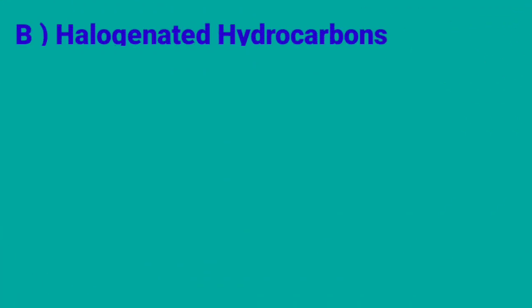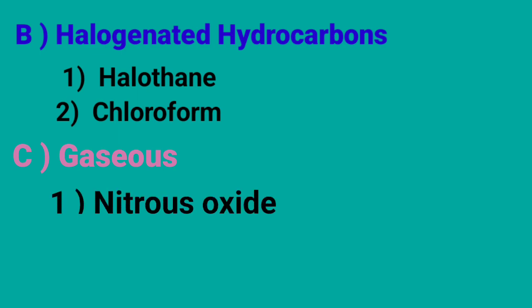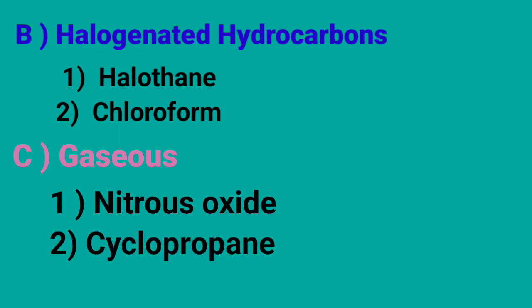B: Halogenated Hydrocarbons. 1. Halothane, 2. Chloroform. C: Gaseous agents. 1. Nitrous Oxide, 2. Cyclopropane.